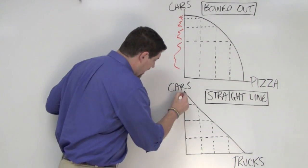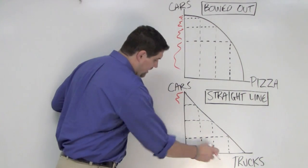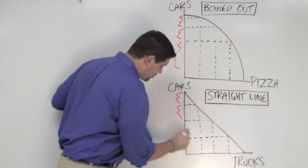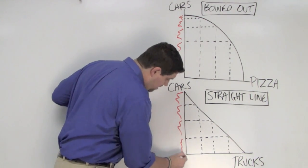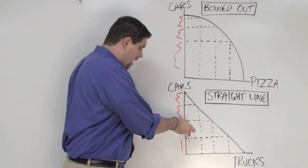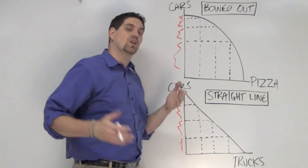So when I produce one truck, I lose a certain number of cars. The next truck is a certain number of cars, and the last truck is a certain number of cars. Notice the opportunity cost is the same, and that means that it's constant.